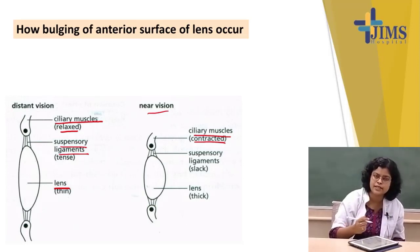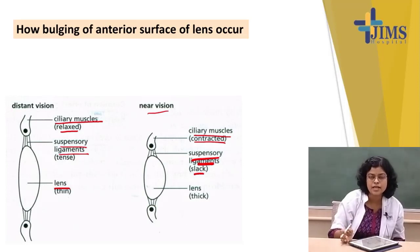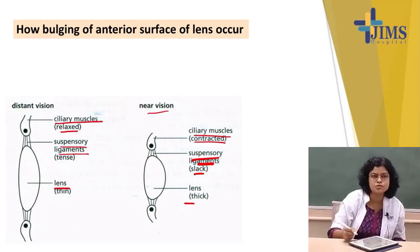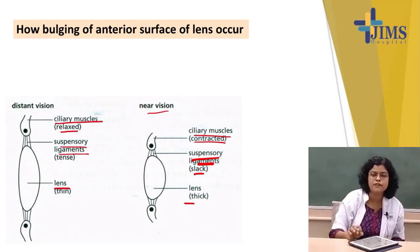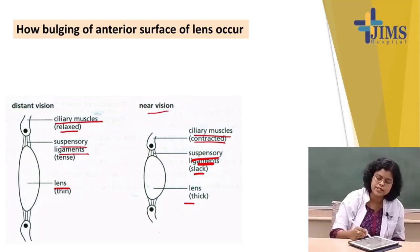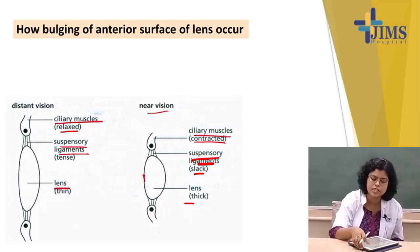During accommodation, the ciliary muscle contracts and the ciliary body moves towards the lens. When it moves towards the lens, the suspensory ligaments become relaxed. When the suspensory ligaments become relaxed, the anterior surface of the lens bulges out. This is how bulging of the anterior surface of the lens occurs. Note that the posterior surface cannot bulge — only the anterior surface can bulge.